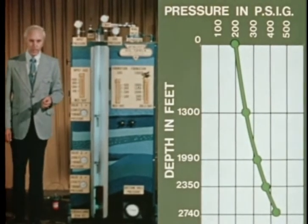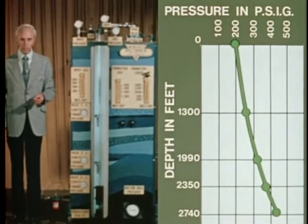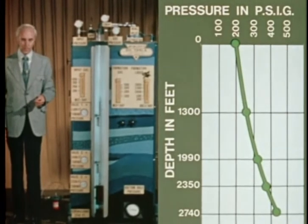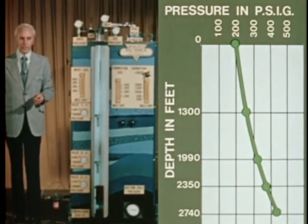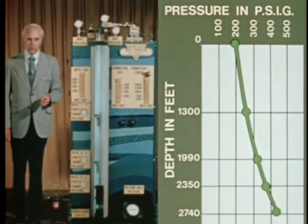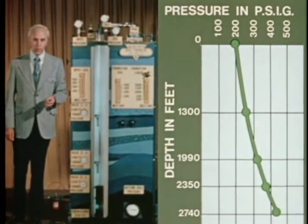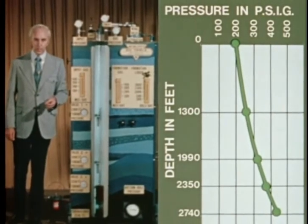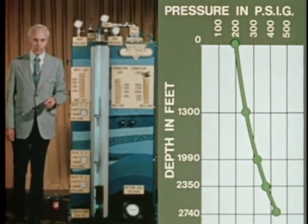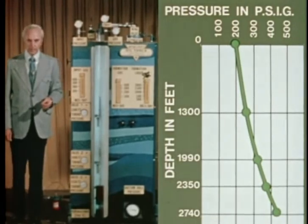The word gradient simply means rate of change. Hence a flowing gradient curve is a curve showing the change in tubing pressure with well depth as a well is flowing.